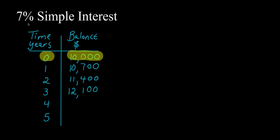This problem scenario says you're given seven percent simple interest and it's applied every year. We can also tell from the table that my initial investment or initial deposit is ten thousand dollars, because that occurs at time zero.